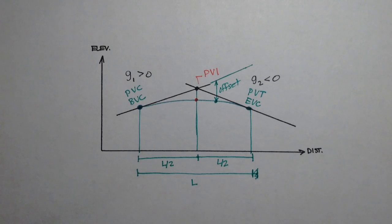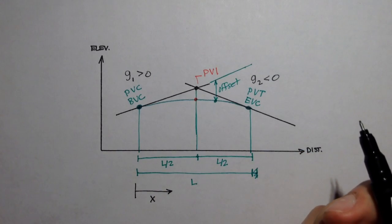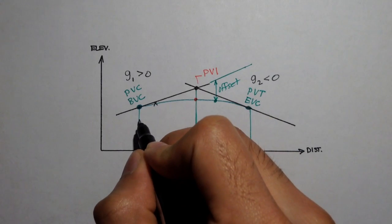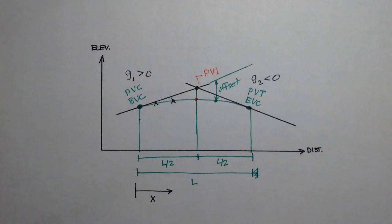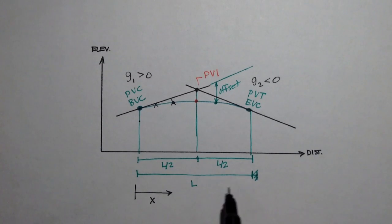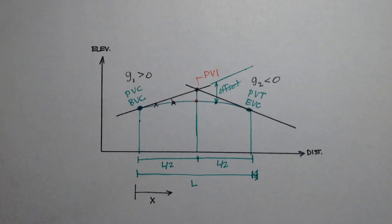There's another parameter called X, and X is the distance from the BVC to any point along the vertical curve. The lengths and distances — including X — are going to be in stations, though you can use feet as well. Vertical curves in geomatics or surveying are based on parabolic functions because they provide much smoother transitions between the entering and exiting grades. In the next video, we'll look at an equation for parabolic curves and see how that equation relates to the vertical curves we want to study.